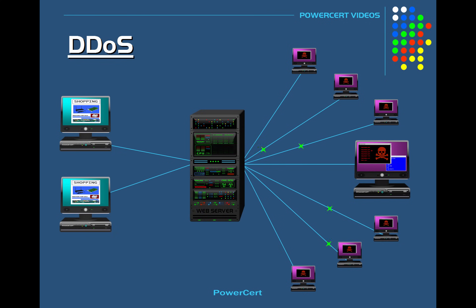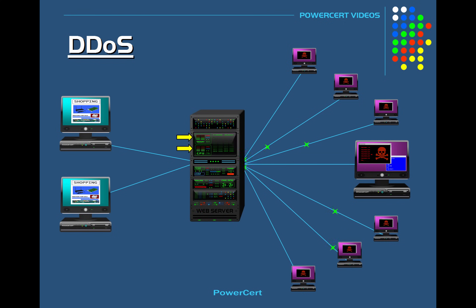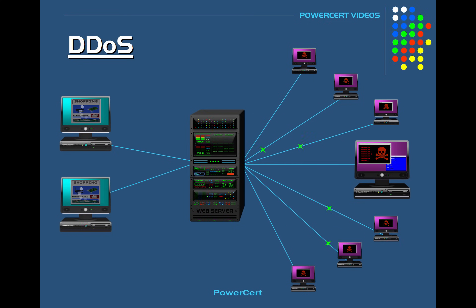A DDoS is an attack from multiple sources all at once. This computer here, who is the ringleader, can communicate with other computers around the world and coordinate an attack on this server. So now instead of an attack coming from a single source, the server has to deal with an attack from multiple sources. When this happens, it will overwhelm the server, eat up its system resources such as the CPU and memory, and eat up network bandwidth. As a result, these legitimate computers are going to be denied service because the server is too preoccupied dealing with the DDoS attack.